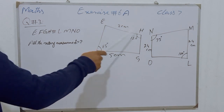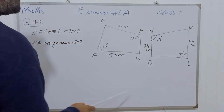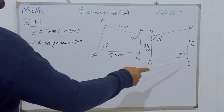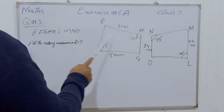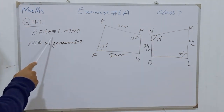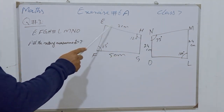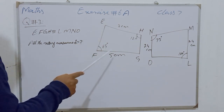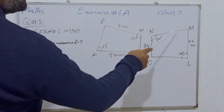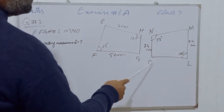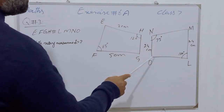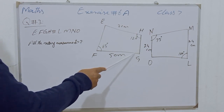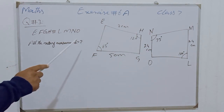Question number 3: there are two quadrilaterals with vertices E, F, G, H and N, L, M, N, O, and both are congruent. We have to find all the missing measurements like EF, HG, NM, OL, Angle M, Angle N, Angle E, and Angle G.